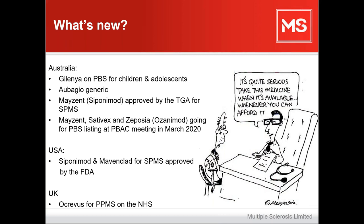There's a medication called Mayzent, with the generic name siponimod, which is quite similar to fingolimod (Gilenya). Siponimod has been proven effective in clinically isolated syndrome, relapsing remitting, and secondary progressive MS. Here in Australia, the TGA — the Therapeutic Goods Administration — has approved siponimod for secondary progressive MS, which is exciting because we've not yet had a treatment available in Australia for secondary progressive MS. It is not yet approved by the PBS.